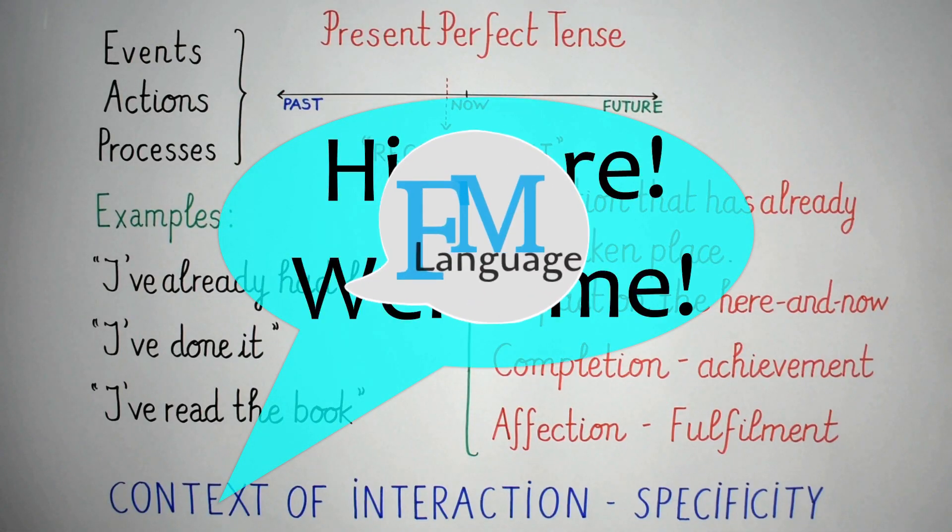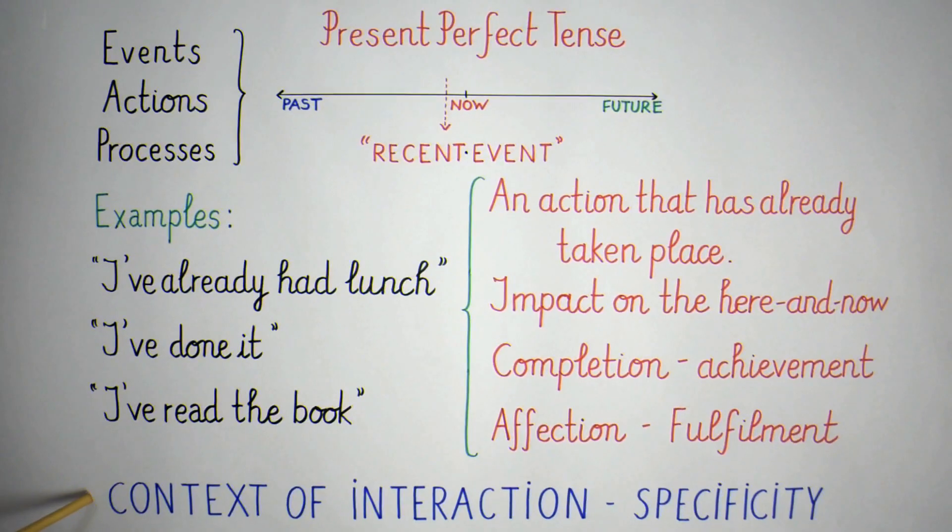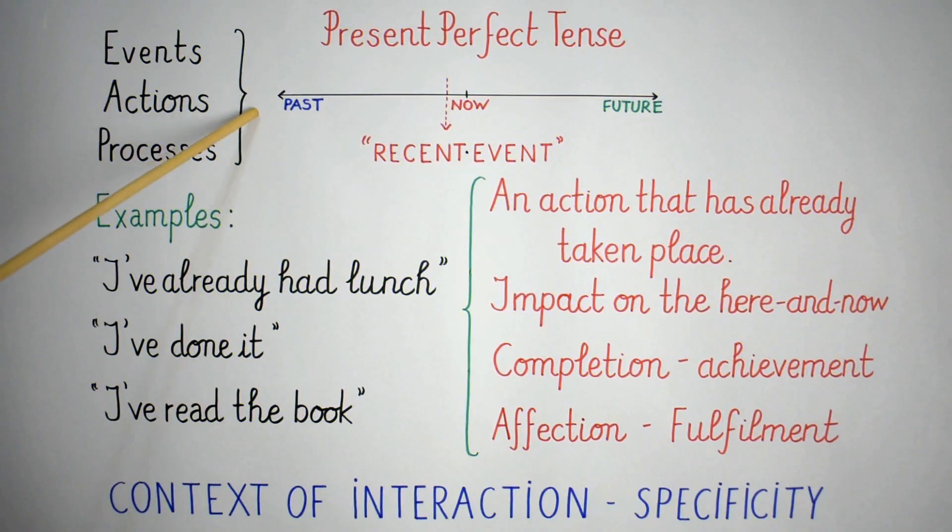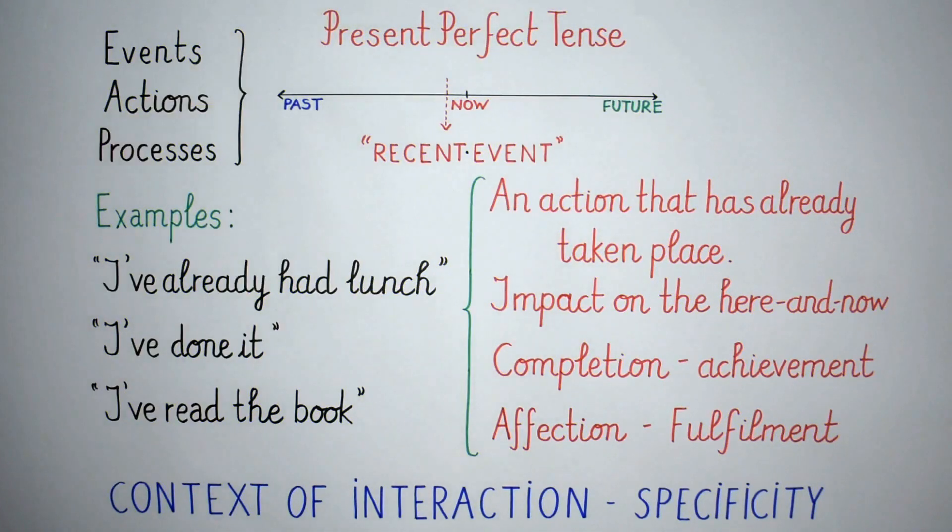Hi there, welcome to FM Language. In today's class we will talk about the present perfect tense. The present perfect tense is used in very specific contexts. Again, we shouldn't be thinking of a timeline where we will locate actions and processes or events at some point. This conception of time will not help at all.